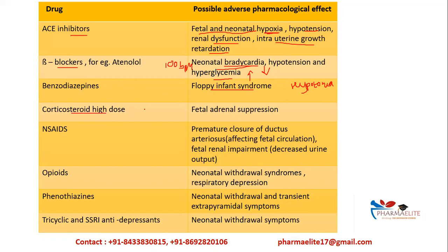Corticosteroids, especially in high doses, cause fetal adrenal suppression. This means adrenal insufficiency occurs inside the fetus — the adrenal gland does not function sufficiently, or ACTH suppression occurs. If the mother is consuming high-dose steroids, it can cause ACTH insufficiency or adrenal suppression in the fetus.